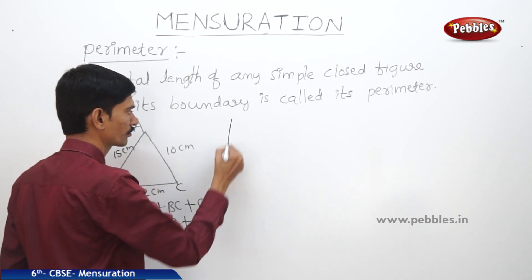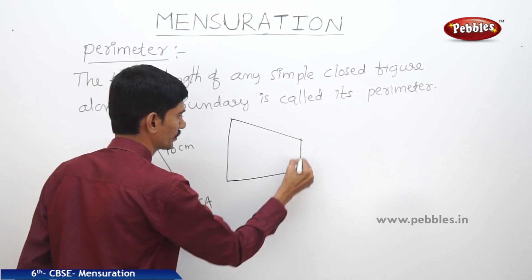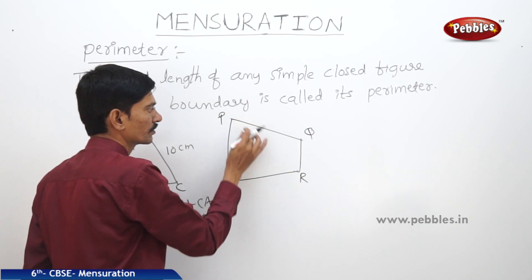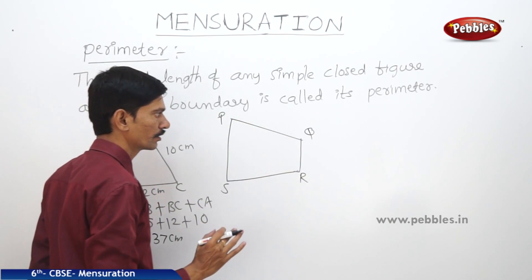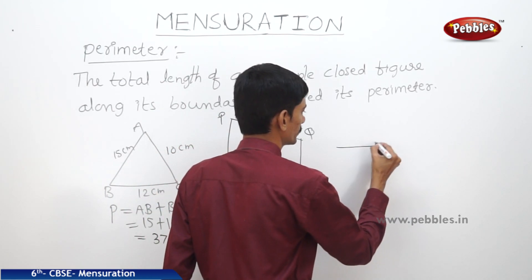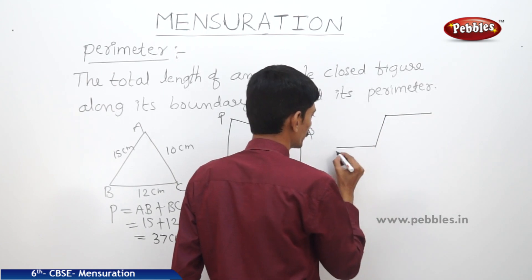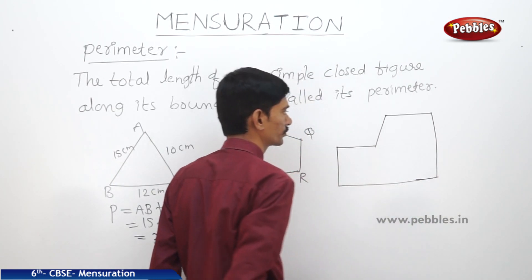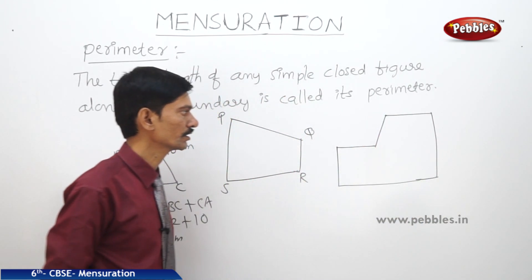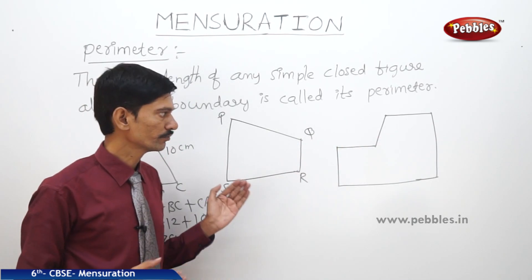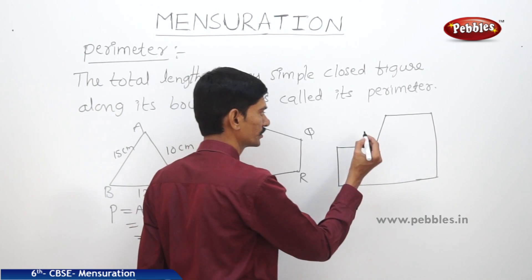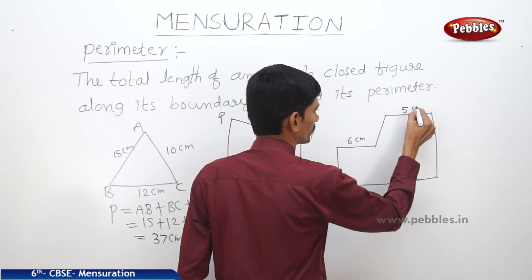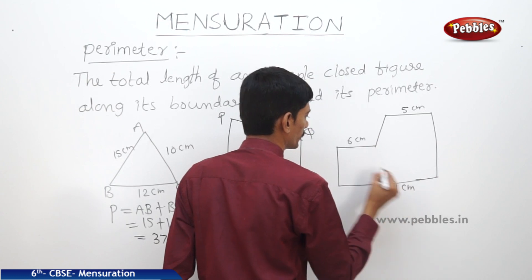If any figure is in the shape of a quadrilateral, we have to find the sum of the lengths of all four sides. If a simple closed figure is formed by line segments but is not in the shape of a triangle or quadrilateral, we must still know the length of each line segment — for example, 6 cm, 5 cm, and 11 cm for sides AB, and so on.